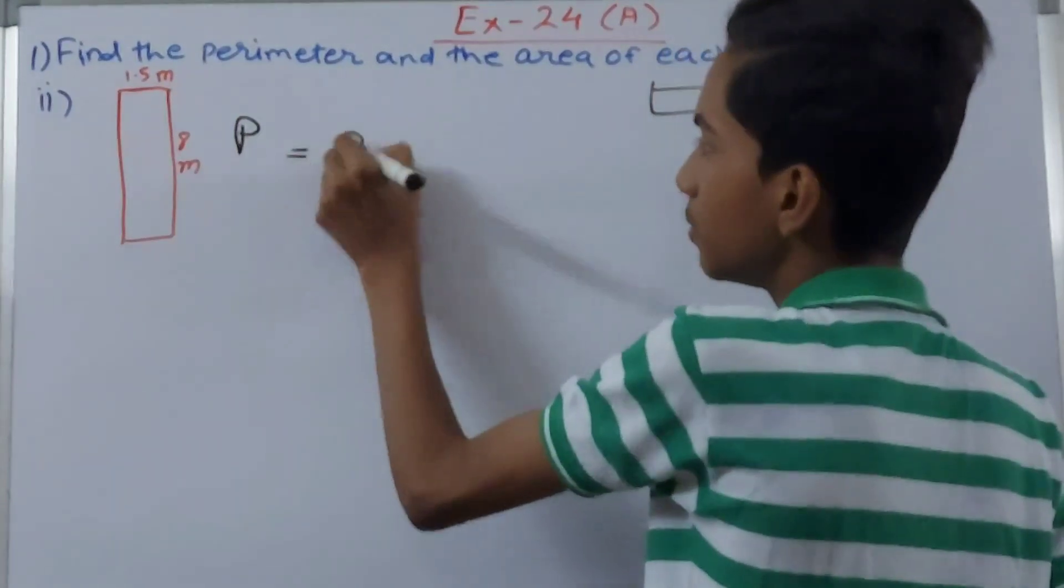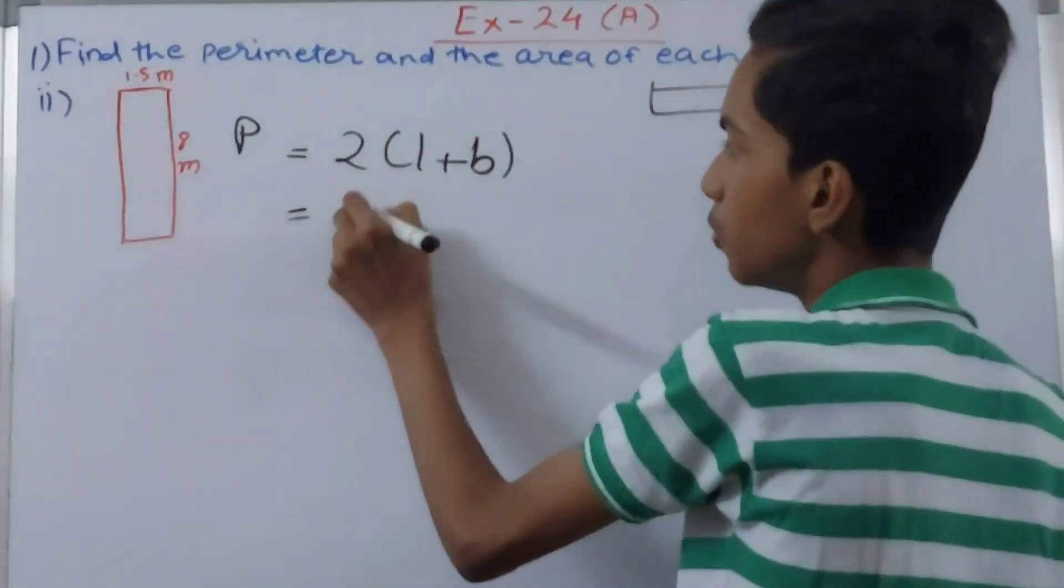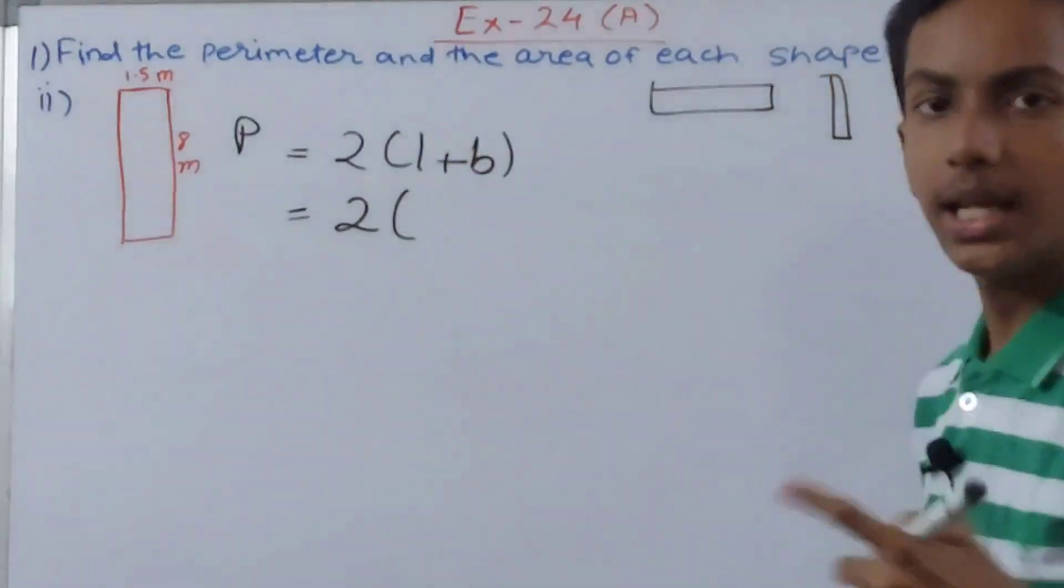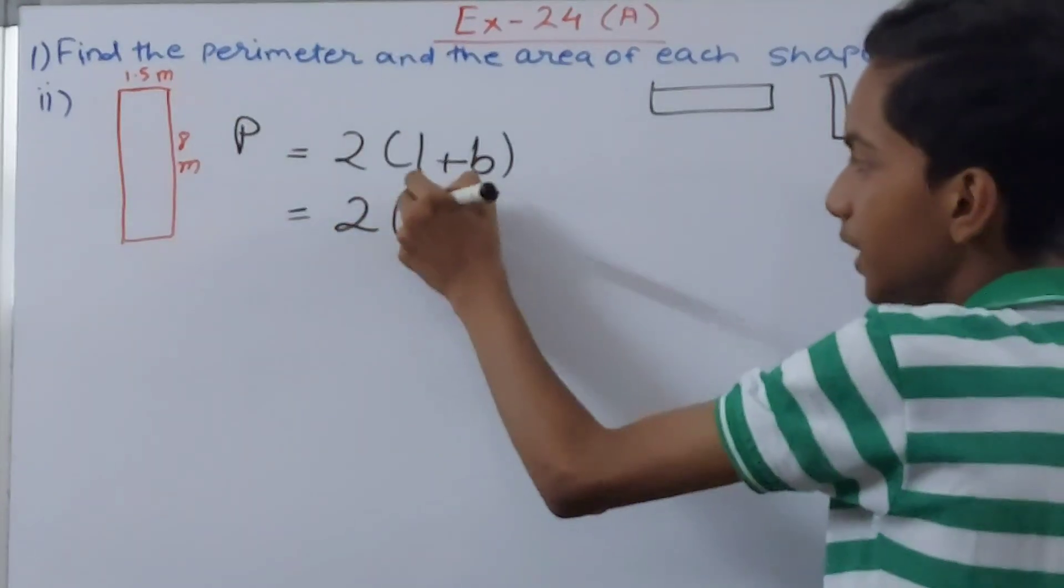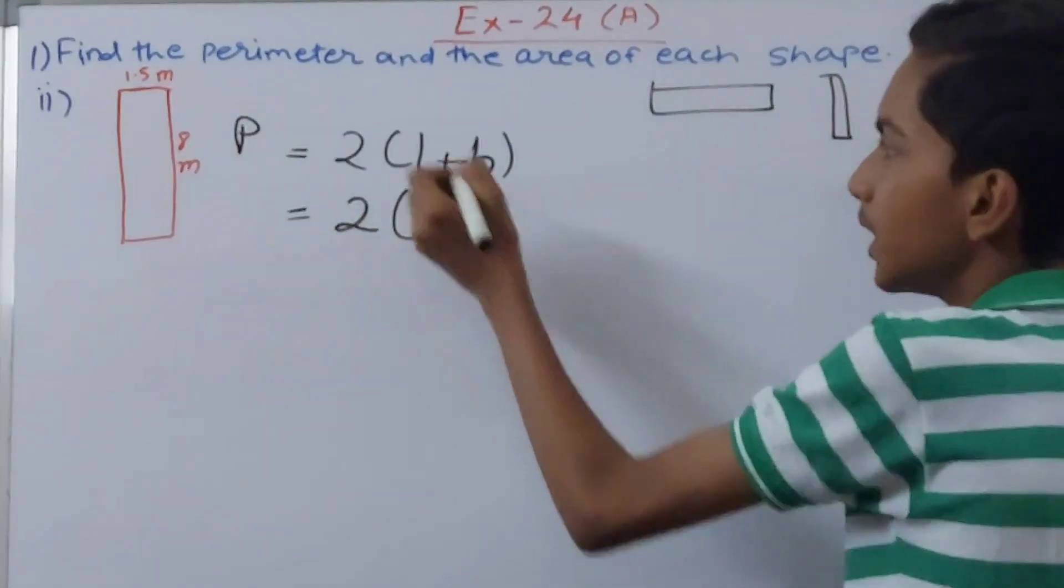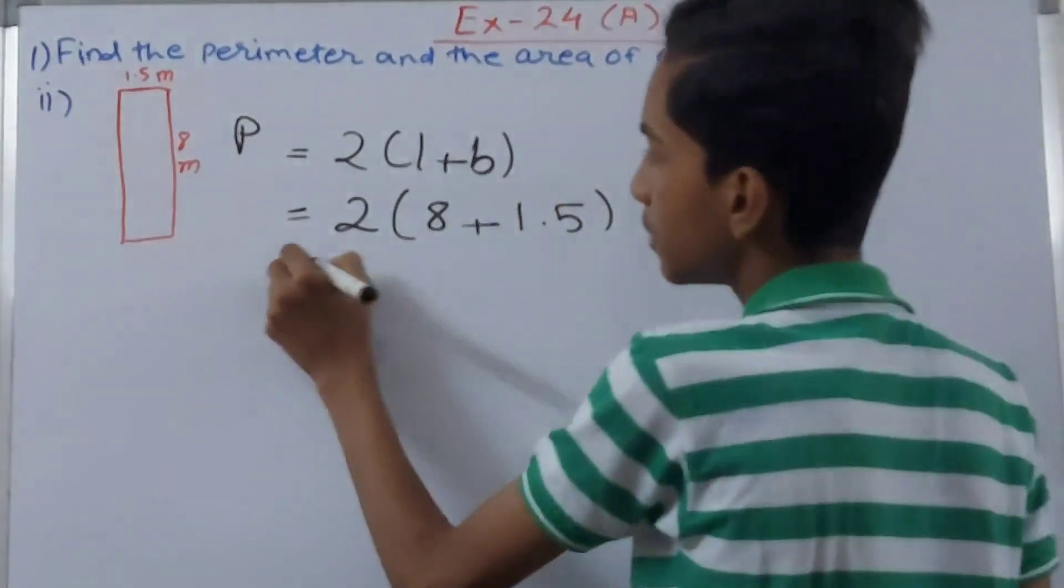We use the formula. First for perimeter, P equals 2(l + b). That will give you 2, remember l is the length. Length is always the longer side, so 8 meters is the longer side, plus breadth is 1.5.